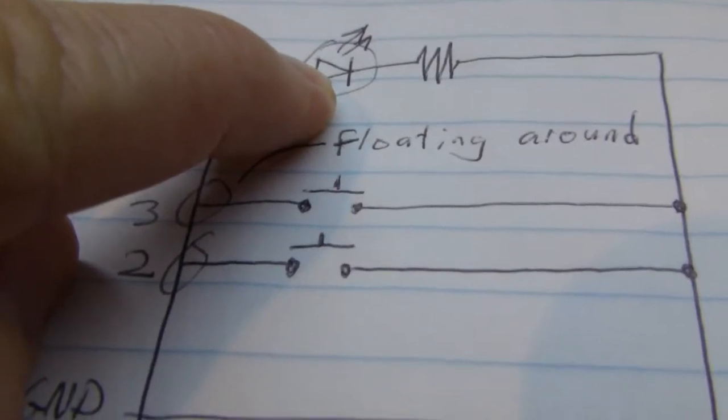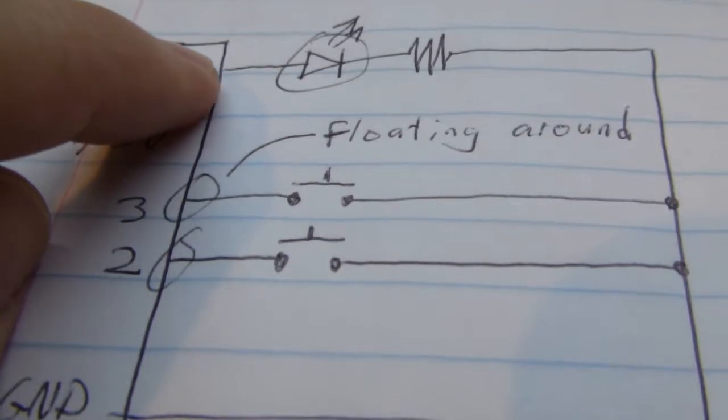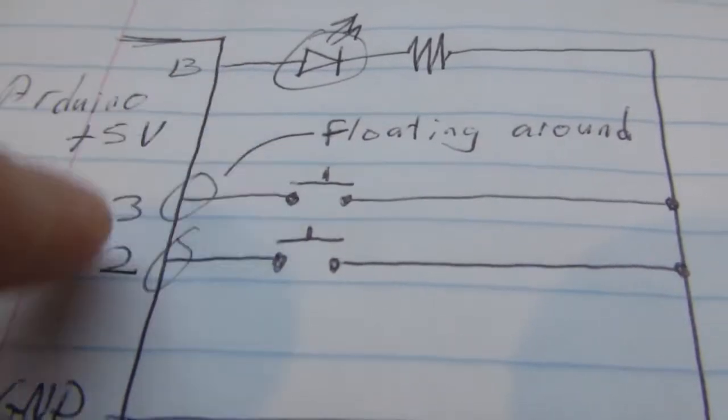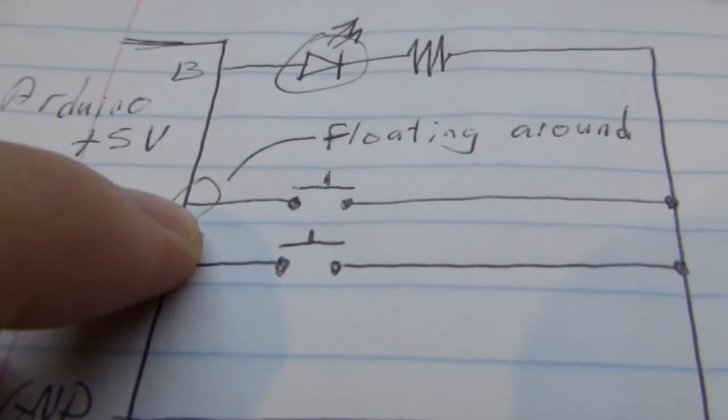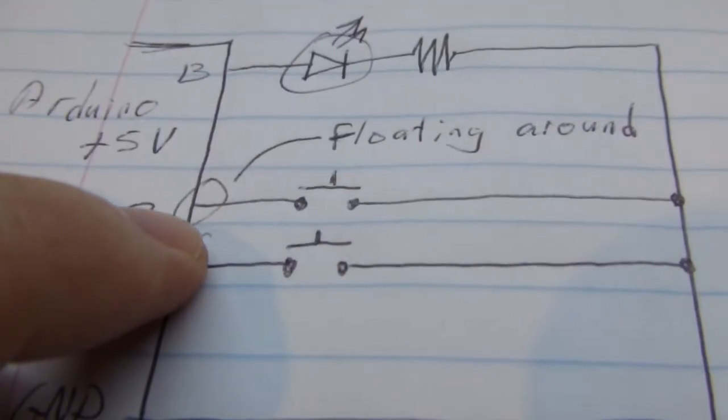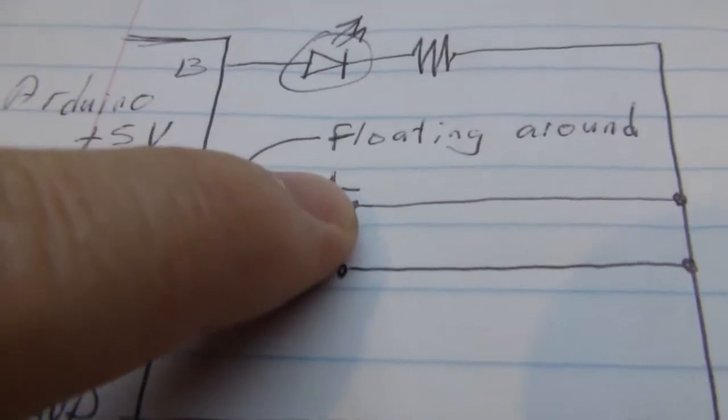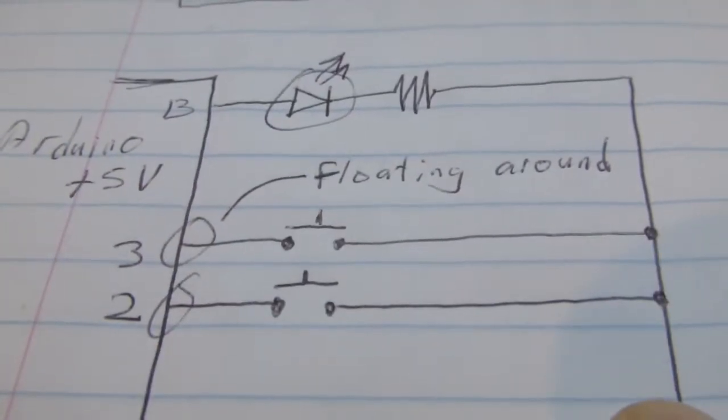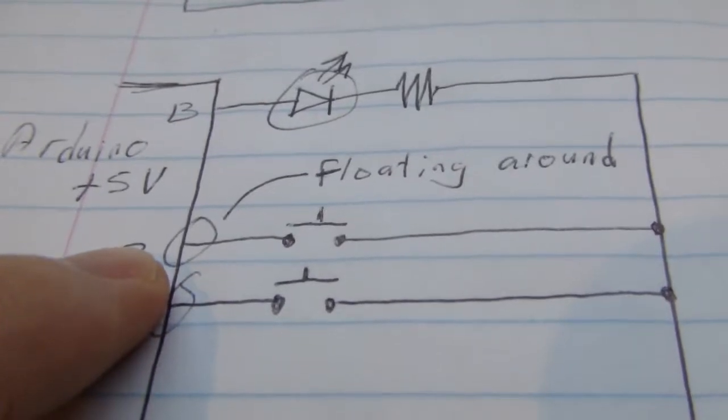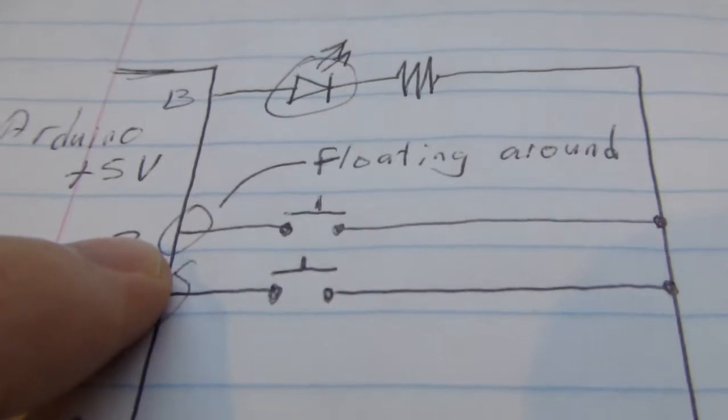Enough to run an LED or even possibly a very small motor or something like that. These are not delivering any current. The problem with that is that you really don't know, you're hoping that this thing would be high until you close the switch and then that would pull it low. Well it's not necessarily going to be because it's just floating around. It could be high, it could be low, it could be whatever.